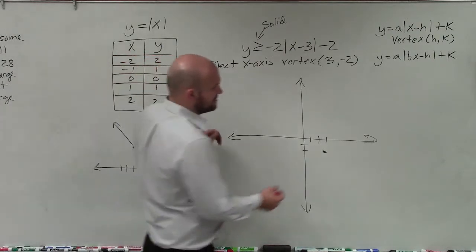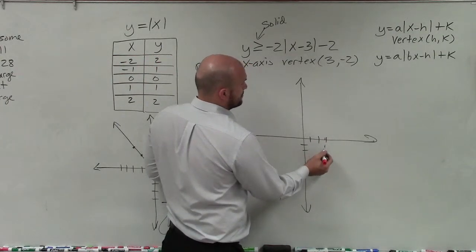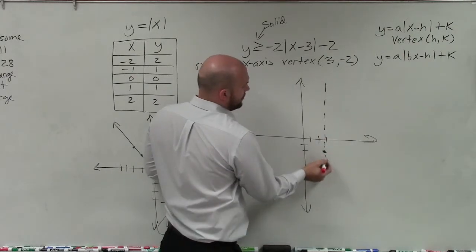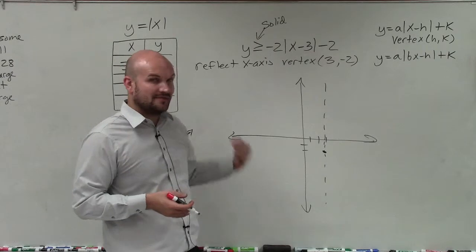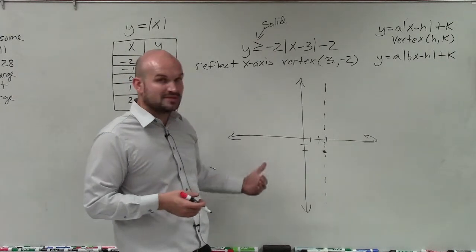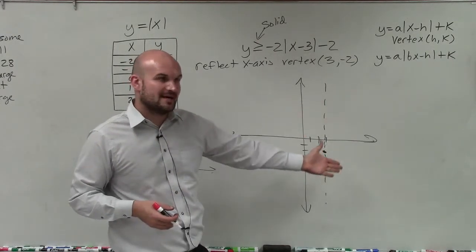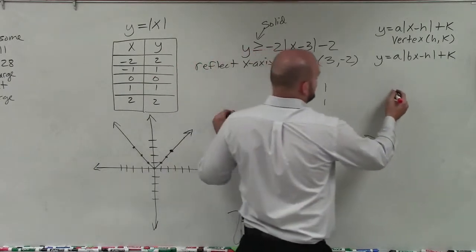So my new line of symmetry is going to go through my vertex, which is that 3, negative 2. So basically what I need to do is if I plot two points to the left, I can then just reflect them over to the right. So let's create a table of values here.